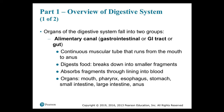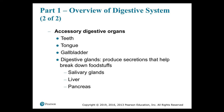The GI tract digests food, breaks it down into smaller fragments, and absorbs the fragments through a lining into the blood. The organs are the mouth, pharynx, esophagus, stomach, small intestine, large intestine, and anus. Accessory digestive organs include the teeth, tongue, gallbladder, and various digestive glands that produce secretions to help break down foodstuffs — the salivary glands, liver, and pancreas.